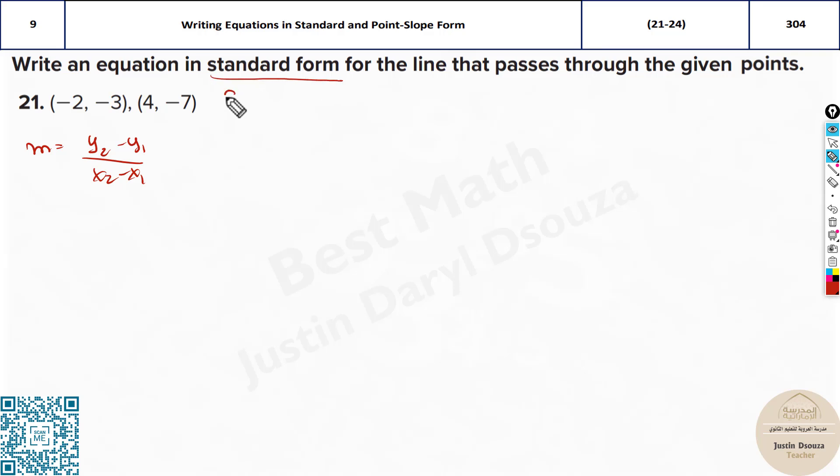What is standard form? Standard form means Ax plus By equals C. The x and y terms are grouped together equals the constant term separately.